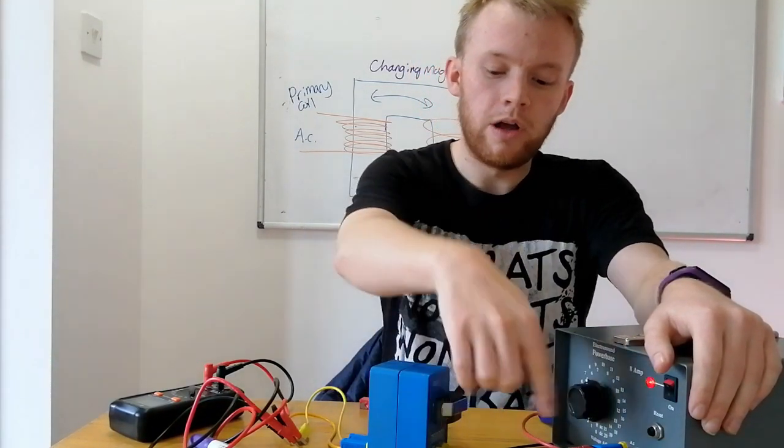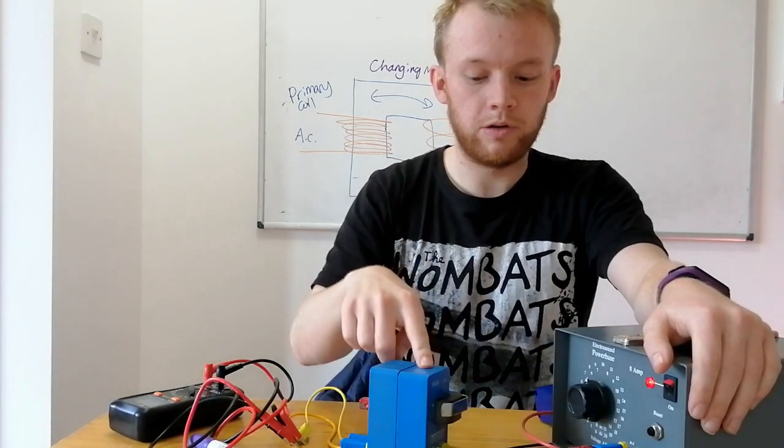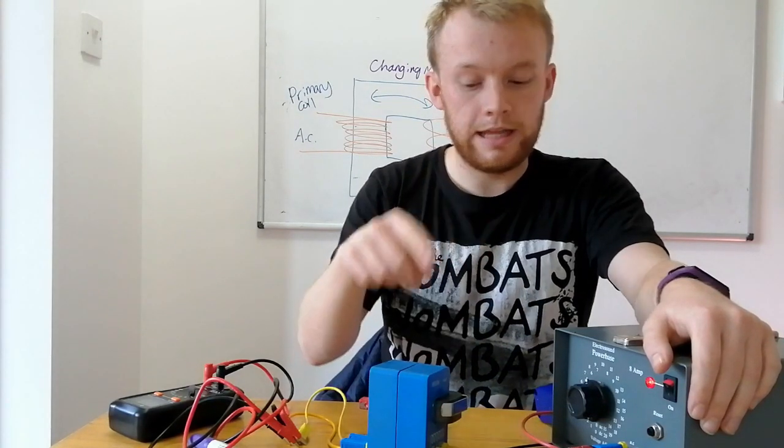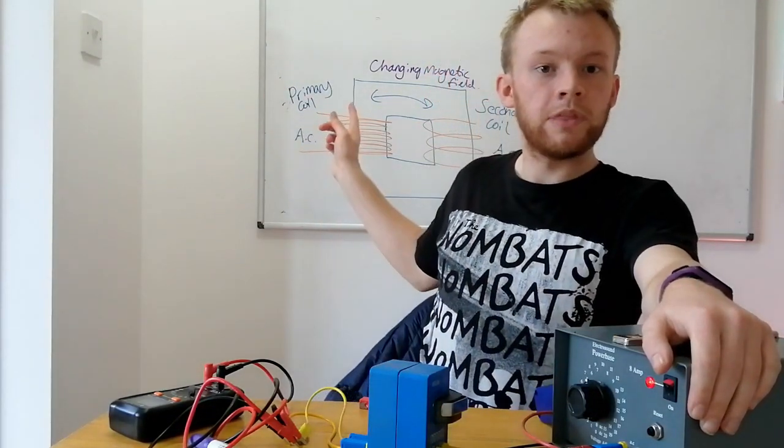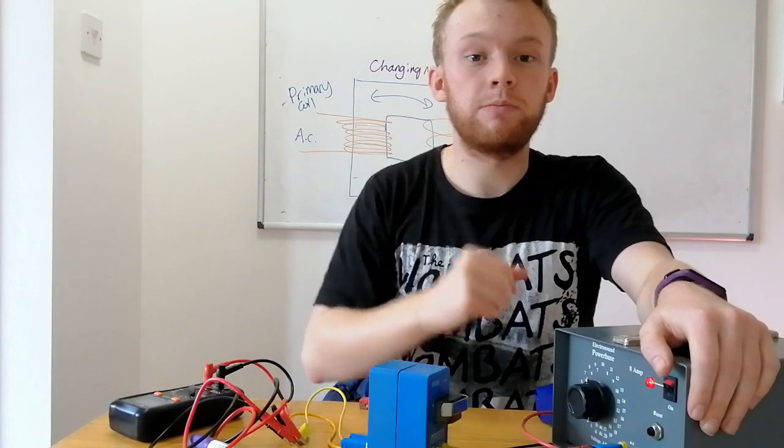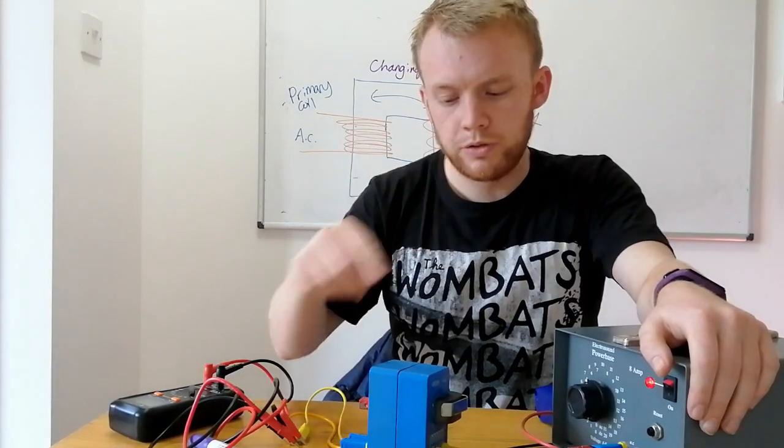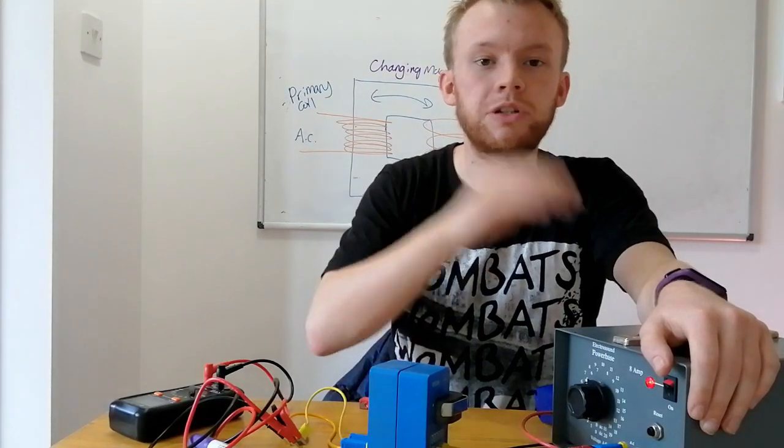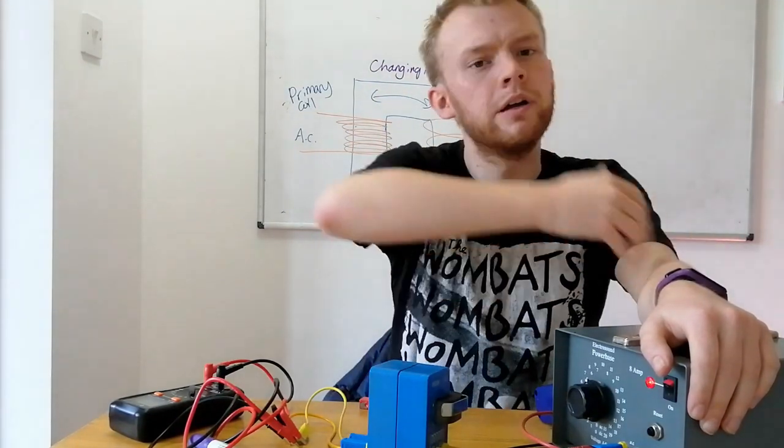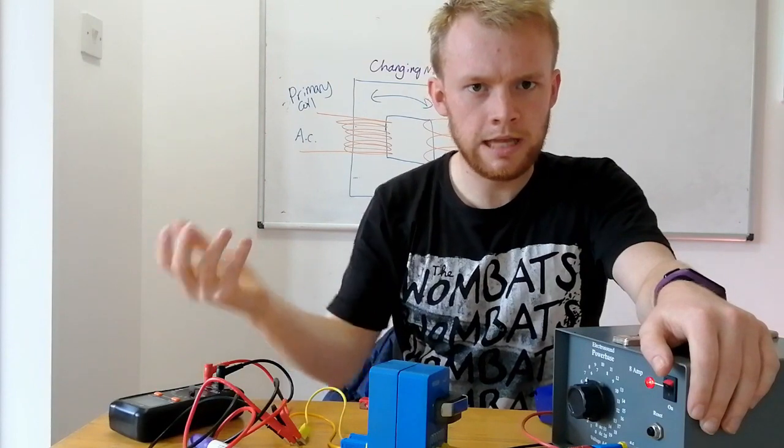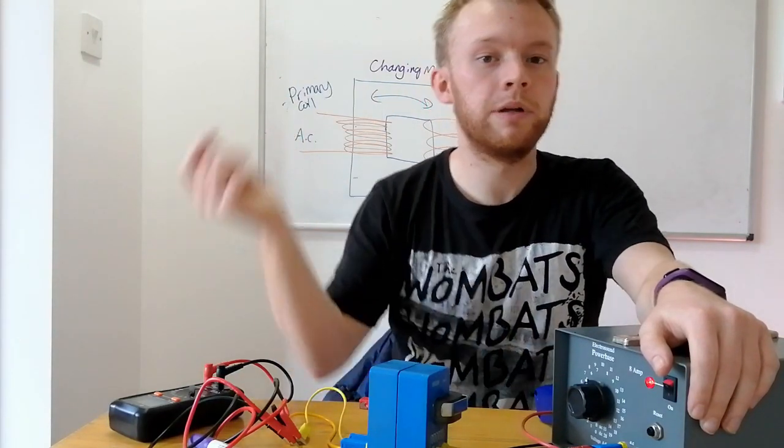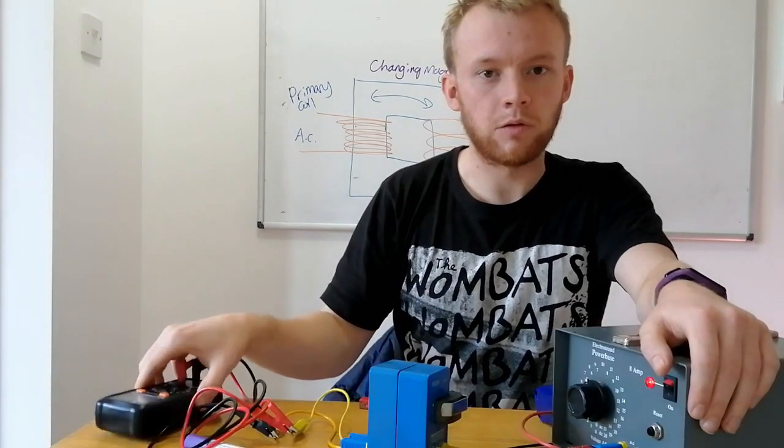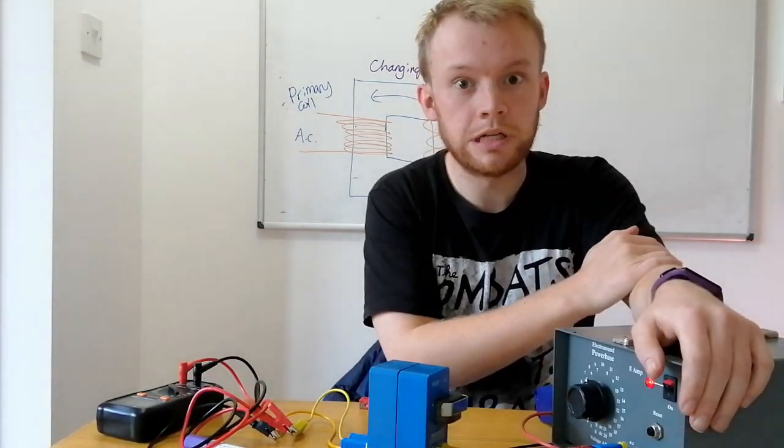So to recap, we've got an alternating current in the primary coil that's producing or inducing a magnetic field in the iron core. And that changing magnetic field in the iron core is inducing a current in the secondary coil. And it all depends on the ratio of the turns. How many turns did you have in the primary coil compared to how many you had in the secondary coil as to whether that's a step-up or a step-down transformer and the voltage that you will see out? Hope that makes sense. See you soon.